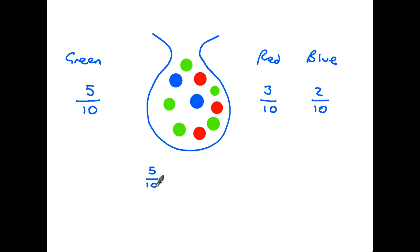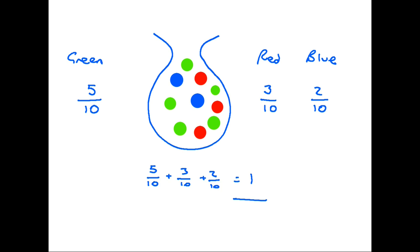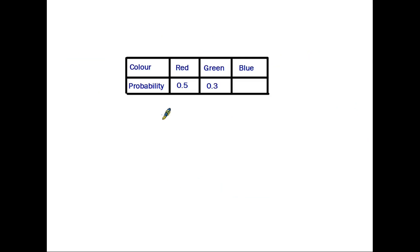The important thing is that if we add up all the probabilities — green, red, and blue — we get three tenths plus two tenths plus five tenths, and the total is one. It is certain that when you put your hand in the bag you will draw out a counter of some colour, so the probability is one. It's also perfectly okay to simplify fractions: five out of ten simplifies to one half, and two out of ten simplifies to one in five.